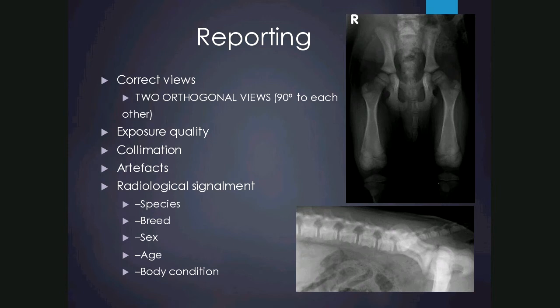Reporting is just another word for reading or interpretation of a radiograph. We need the correct views — two orthogonal views at 90 degrees to each other. While reading, we assess the exposure quality and decide if it's diagnostic or if there's a problem such as under- or over-exposure, then decide if it needs to be repeated. Collimation refers to the area of interest being included, and artifacts need to be recognised and assessed.